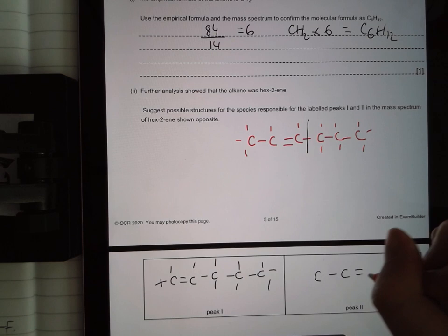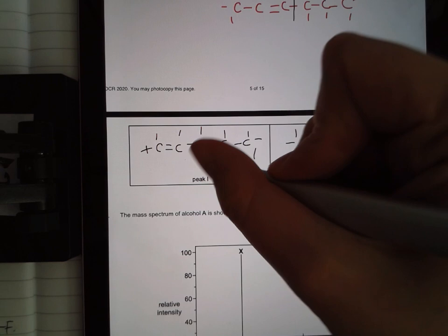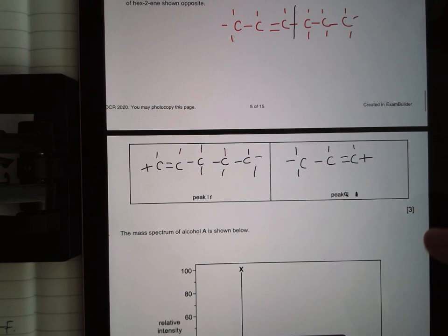So if I do that, what am I left with? I'm left with this fragment here, and again, because it's giving me a peak, it must be an ion, and I'm going to put a positive charge. If you forget your positive charges, you are going to lose a mark. So I'm sorry, I've drawn these the wrong way around. This is my peak 2, and this is the peak 1. Make sure you are including your positive charges.